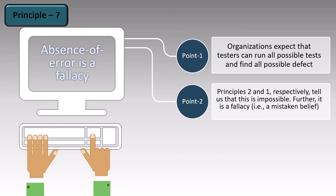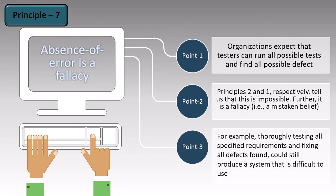Further, it is a fallacy — a mistaken belief — that a tester can find all the mistakes that exist in software. Our final point is that thoroughly testing all specified requirements and fixing all defects found could still produce a system that is difficult to use. Even if we do everything, there can still be environmental conditions, unfound defects, or other factors that can cause the product to fail. This is why we cannot say that there are no errors left in the software. If someone claims that, it is a mistaken belief.